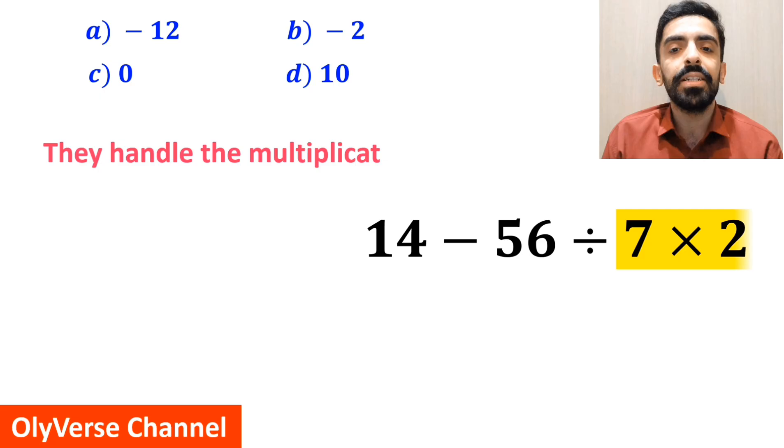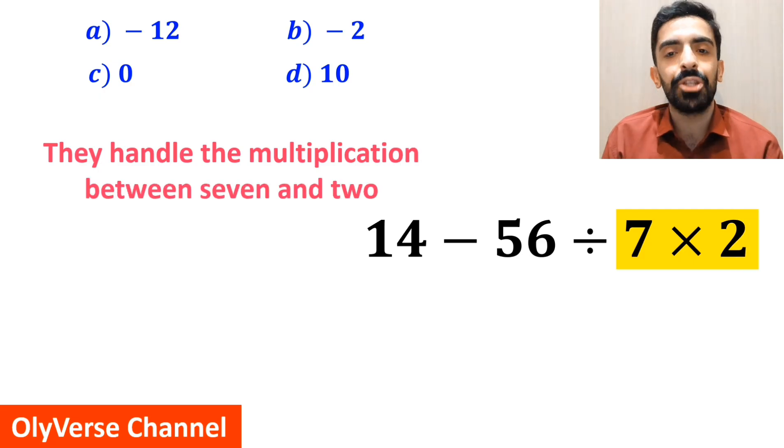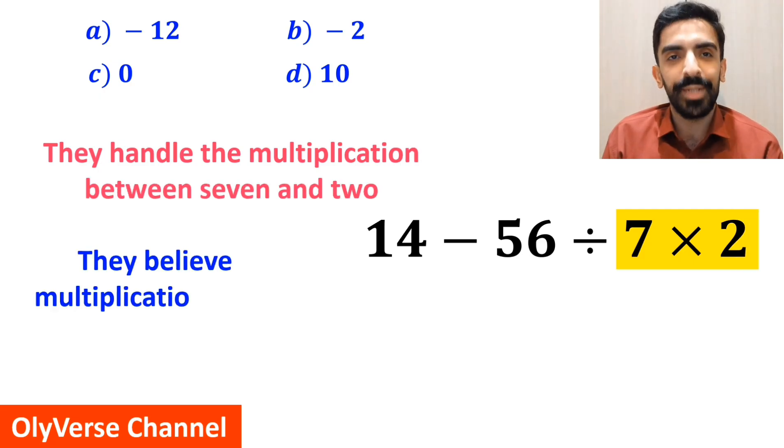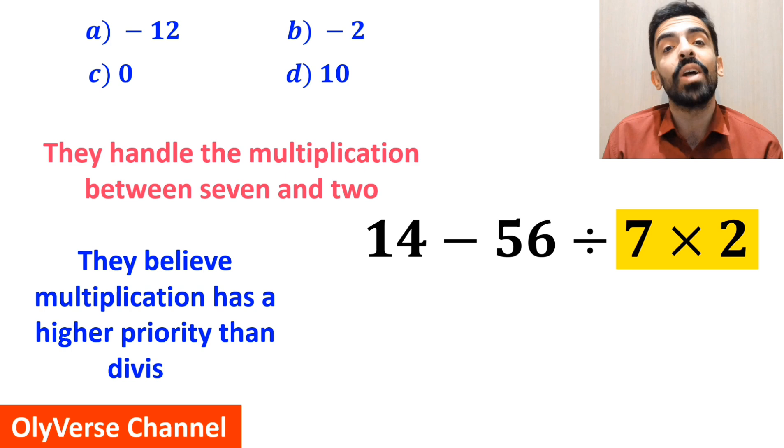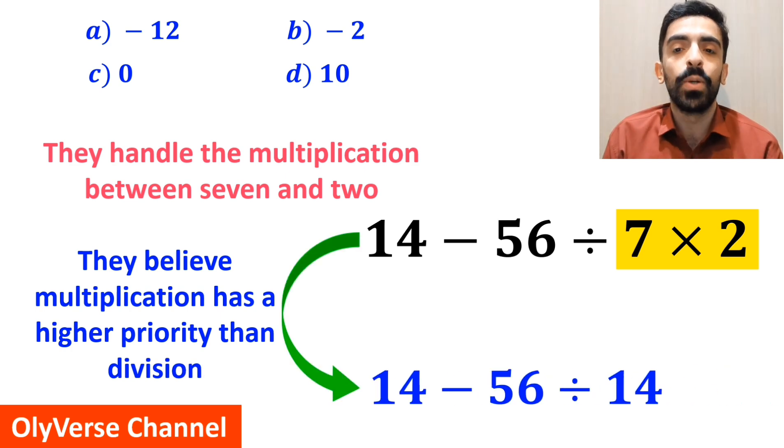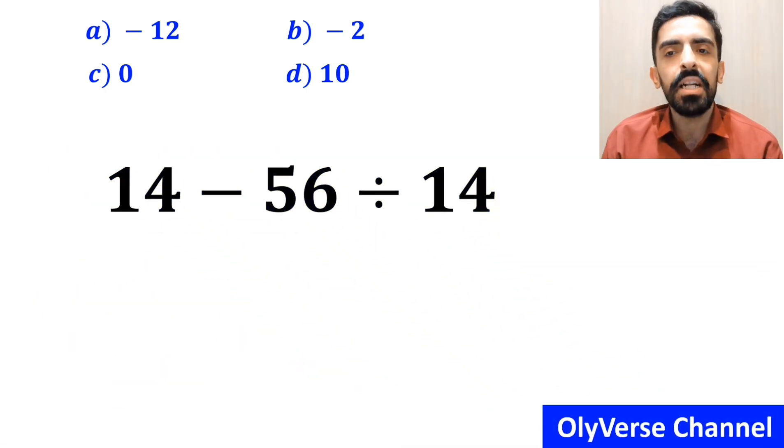In the next step, first they handle the multiplication between 7 and 2, because they believe multiplication has a higher priority than division. So, they rewrite this expression as 14 minus 56, divided by 14.